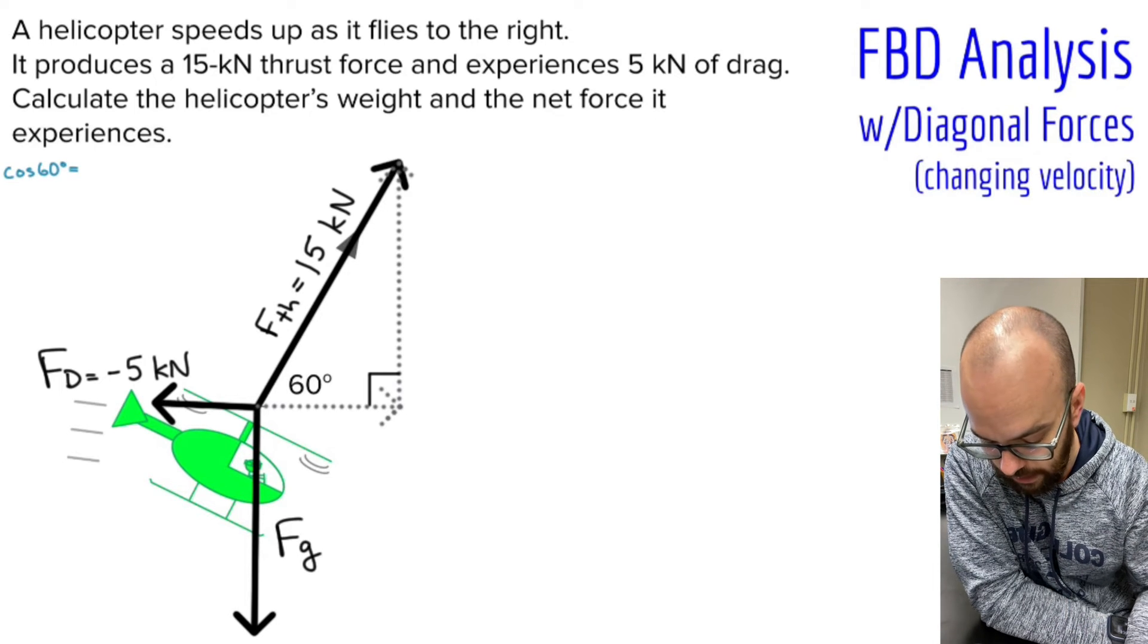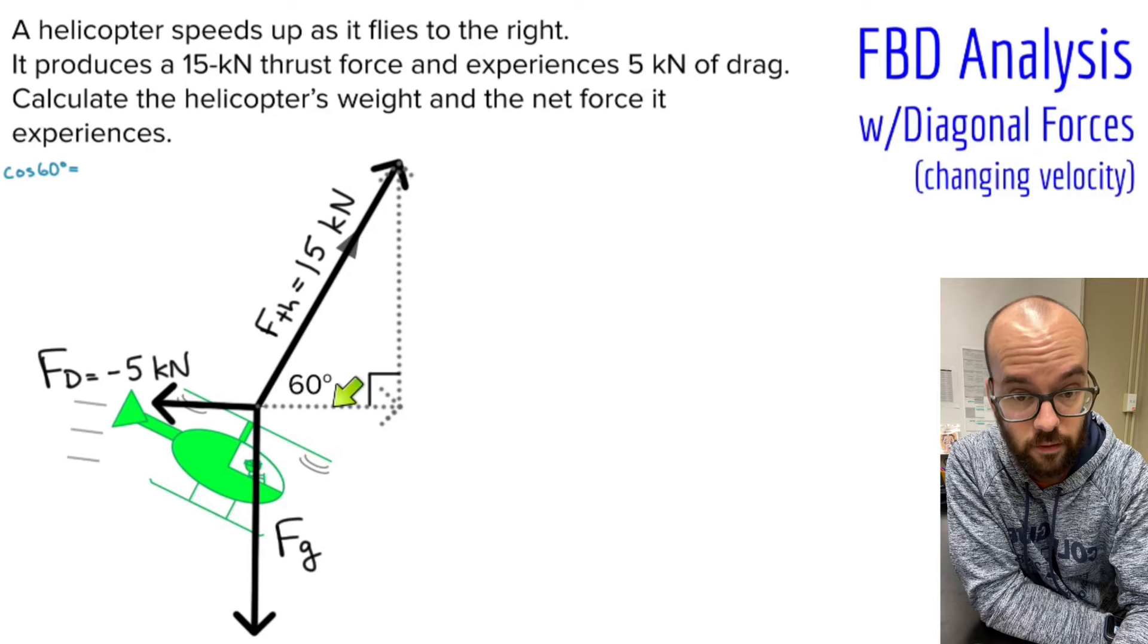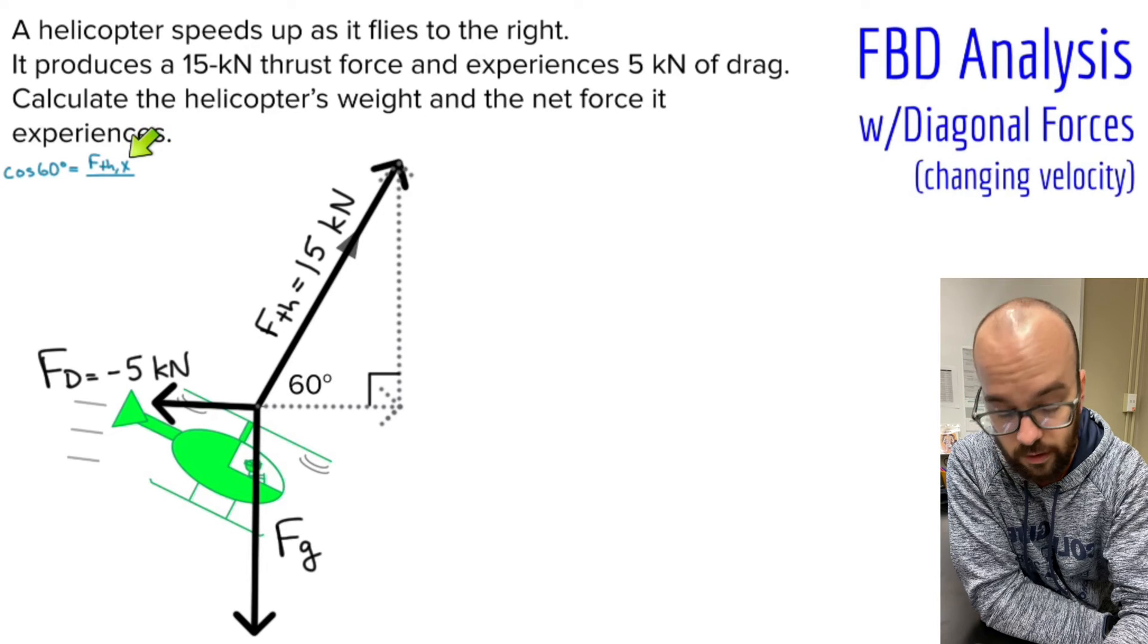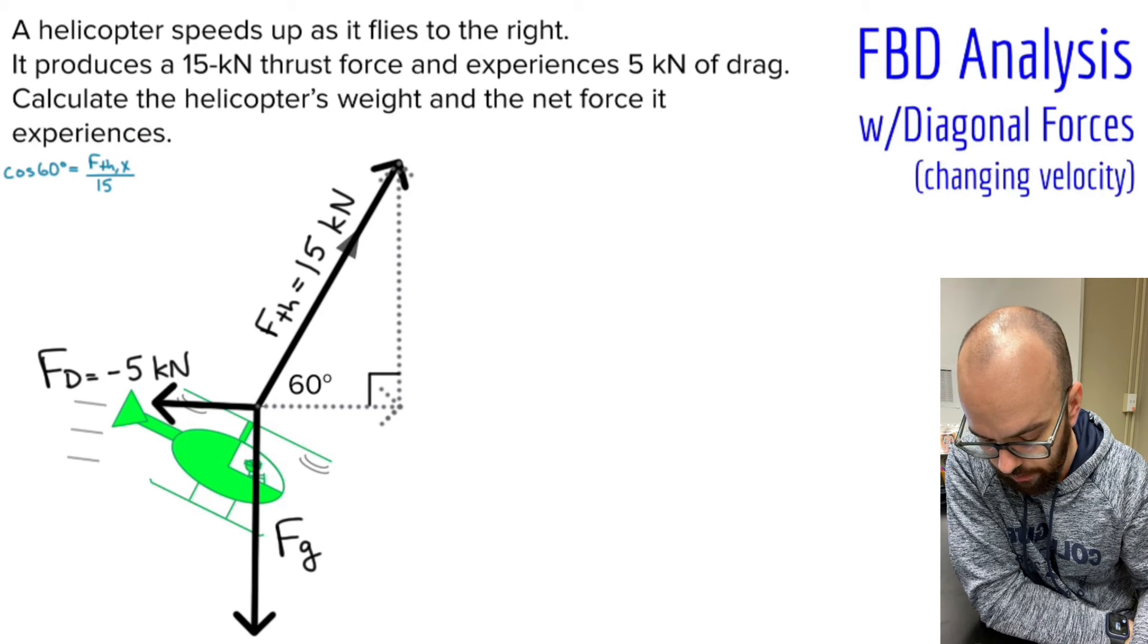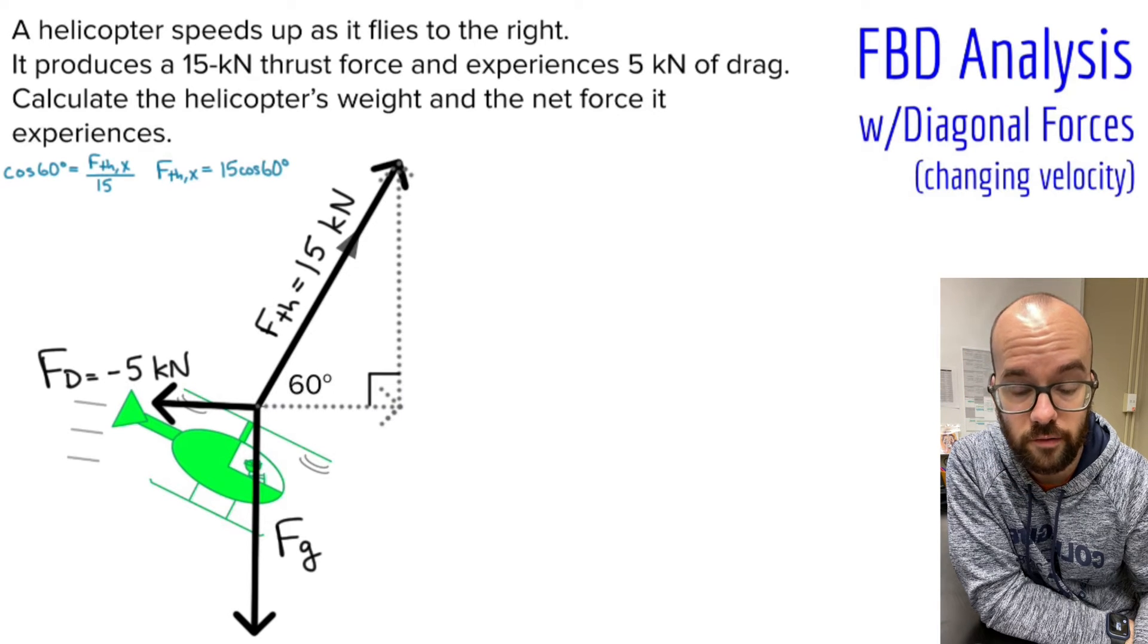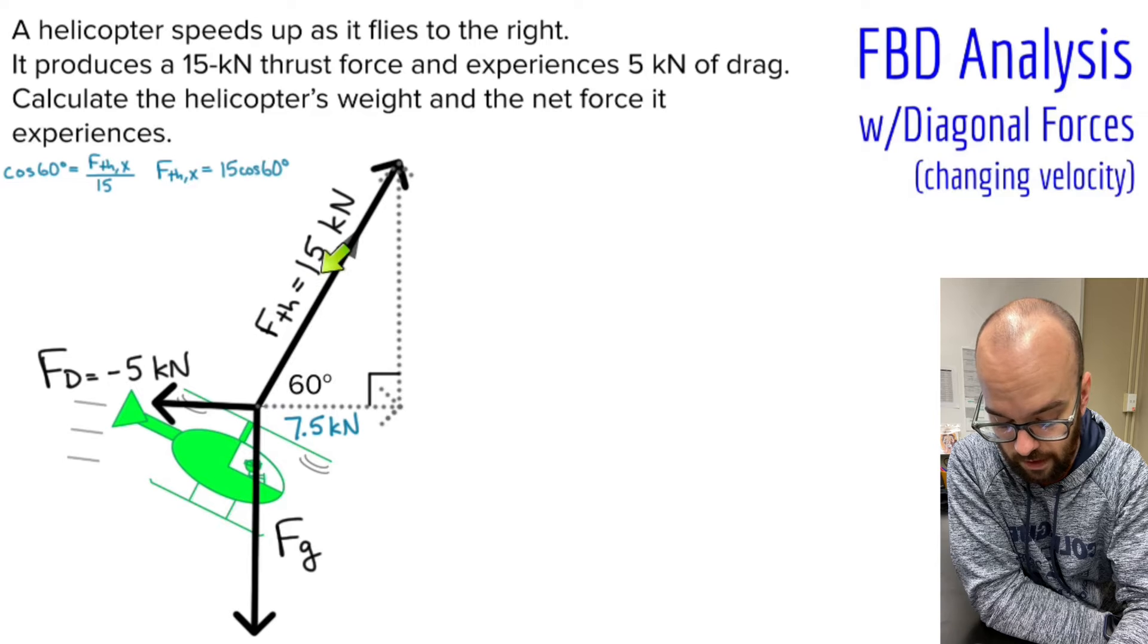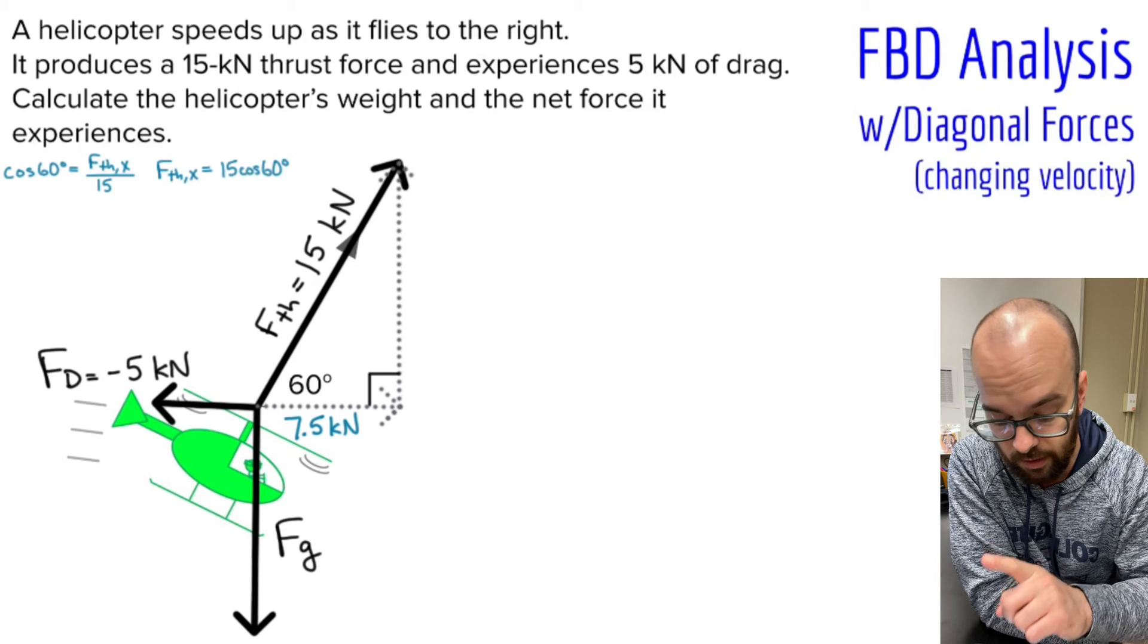Let's start with cosine of 60 degrees. I'm going to solve for this adjacent component first. Cosine of 60 degrees will be adjacent, this component right here, over the hypotenuse of 15. That component I don't know, I'm going to call it FTHx—it's the thrust force, the horizontal component or X of the thrust force, over my hypotenuse of 15. Multiply by 15 on each side, and I get FTHx equals 15 cosine of 60 degrees. In the calculator, that comes out to be 7.5 kilonewtons. Also, if we know this is a 30-60-90 right triangle, we can just divide that in half across the 60 degrees to get 7.5.